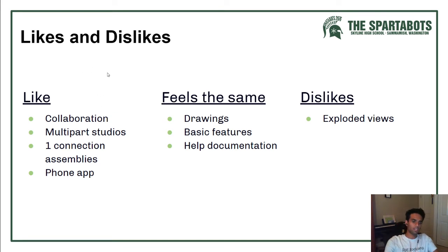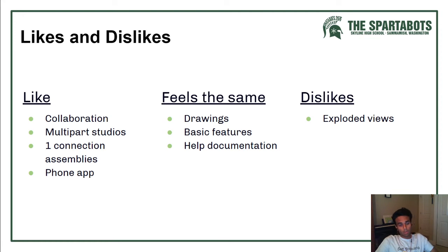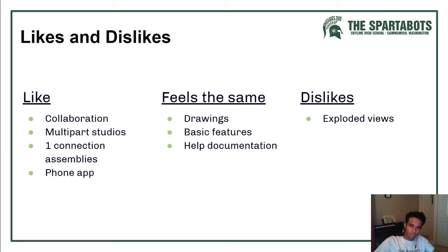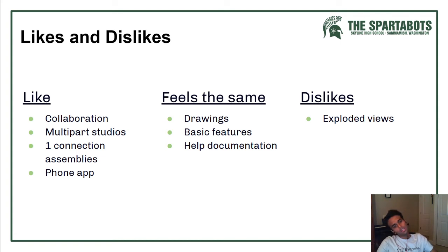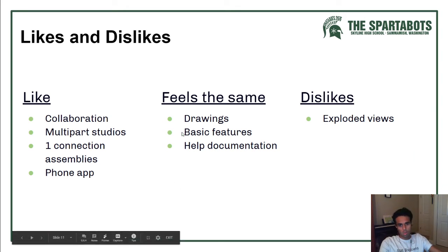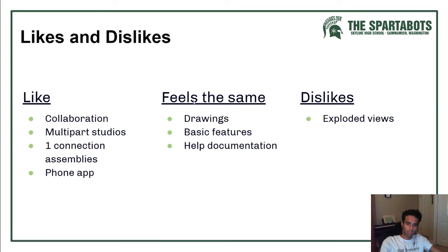Some likes about Onshape: it is very collaboration-friendly, like Google Docs — multiple people can be on one document working at the same time and it updates automatically for everyone. Multi-part studios mean you can have more than one part in a single part studio, which makes file organization a lot better. Assemblies update automatically when you update the parts, so you won't get errors.